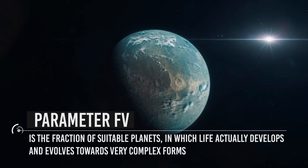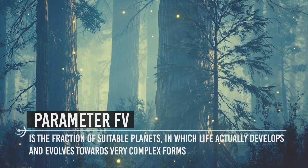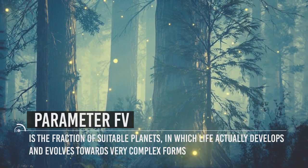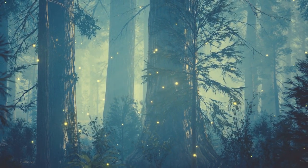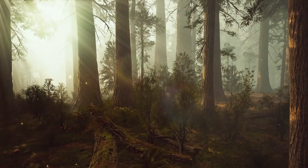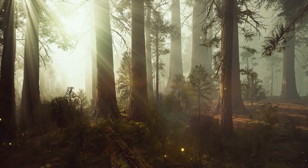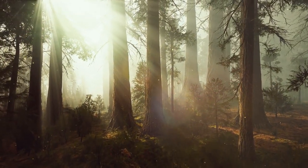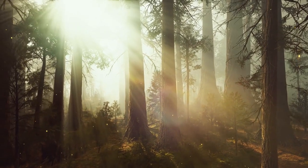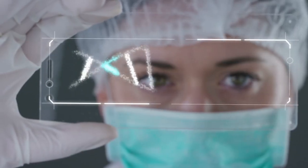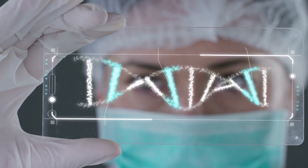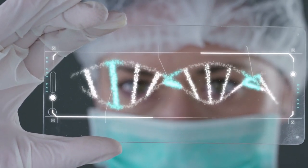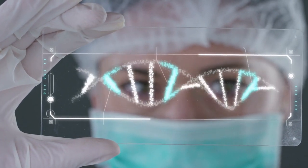FV is the fraction of suitable planets in which life actually develops and evolves towards very complex forms. This variable takes into account how many of these life-forming planets were actually able to do so. Life, as and perhaps more than any other event within our universe, is a complex phenomenon, subject to many, too many variables, and the physical, chemical, and biological path that leads to its development can be diverted or interrupted by a whole series of factors, some currently known and many others unknown.